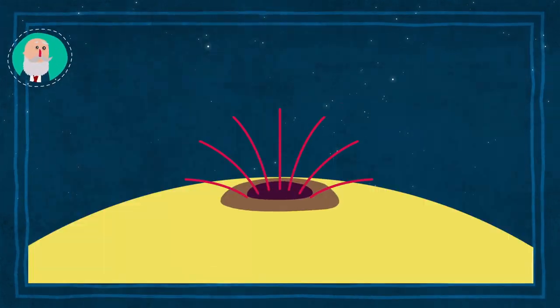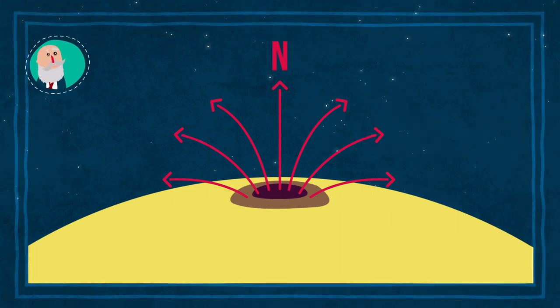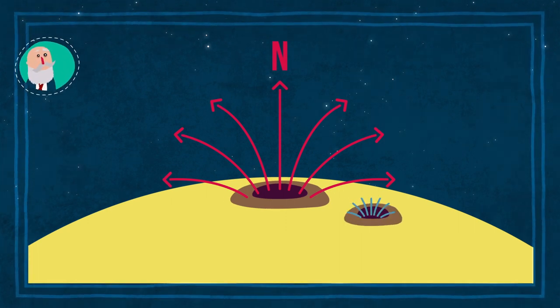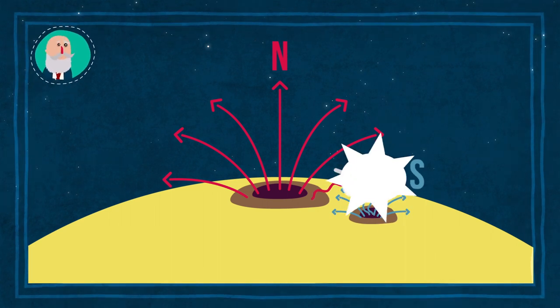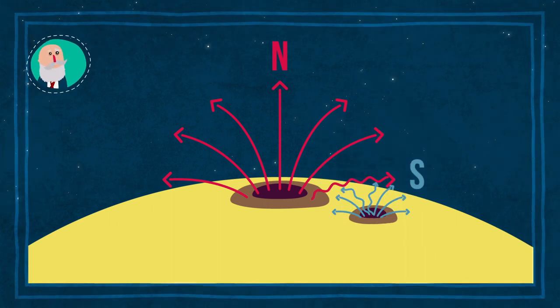Wie wir in früheren Folgen gelernt haben, zeichnen sich Sonnenflecke durch starke Magnetfelder aus. Manchmal verbinden sich die Magnetfelder neu und setzen dabei riesige Mengen an Energie, Strahlung und Teilchen frei.